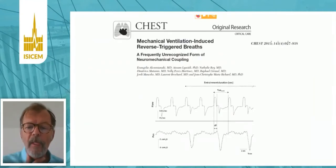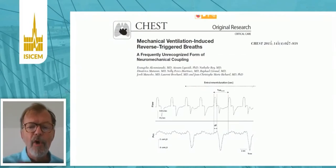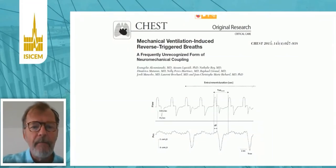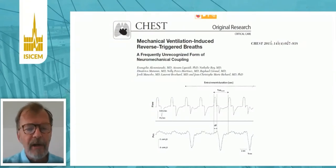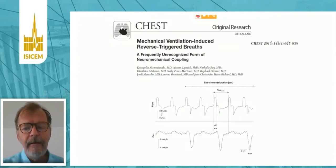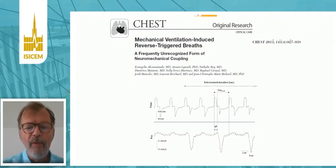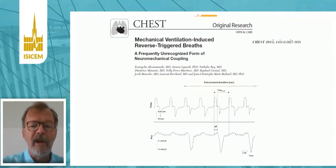A few years ago, we described something which was known in the field of chronic ventilation, but not in the ICU. We realized that some patients were not triggering the ventilator, but had respiratory muscle contractions which were triggered by the mechanical insufflation. We call this the reverse triggering phenomenon because the ventilator was triggering the breath.